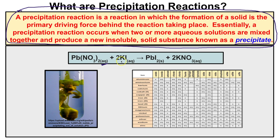We're going to mix this with some potassium iodide that has also been dissolved in water — it's aqueous. When you mix these two aqueous solutions together, what ends up being produced is a solid insoluble mass. This lead(II) iodide does not stay dissolved in water. It's insoluble. It precipitates out. This lead(II) iodide is called your precipitate.